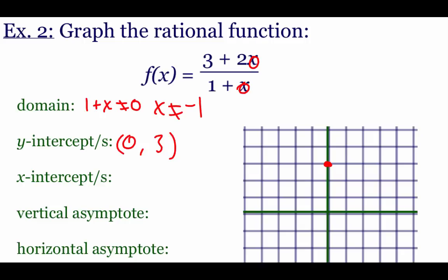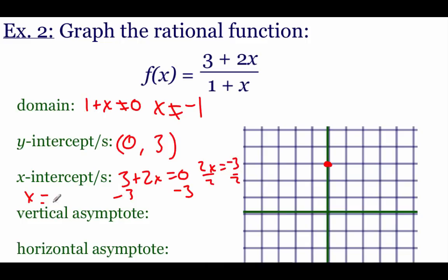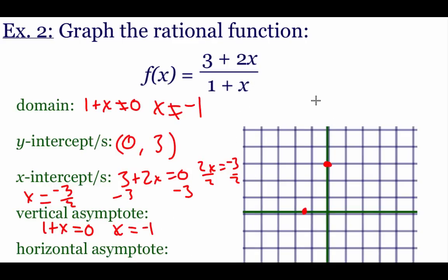Finding the x-intercepts: take the top and set it equal to zero. Subtract the three over to get 2x equals negative three, divide by two, giving x equals negative three halves. Plot that point — go left one and a half spaces. Next, the vertical asymptote: take the bottom and set it equal to zero. Subtract the one over to get x equals negative one. Draw a vertical line through x equals negative one.